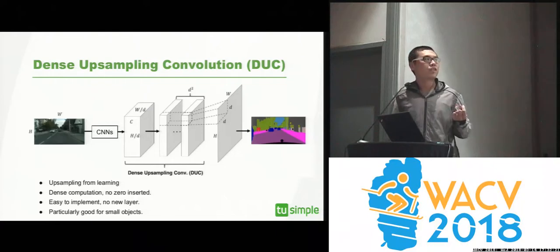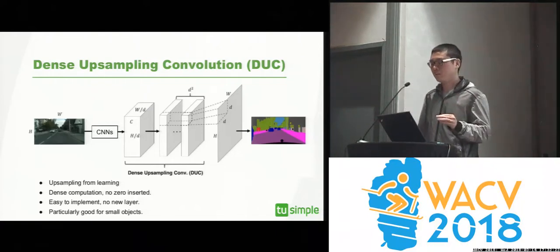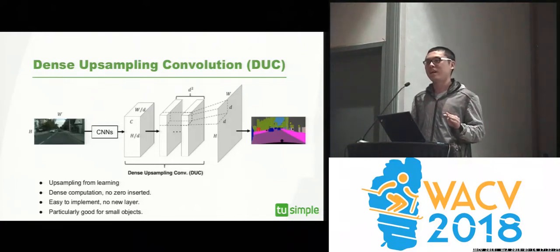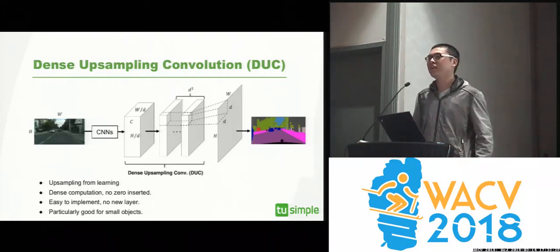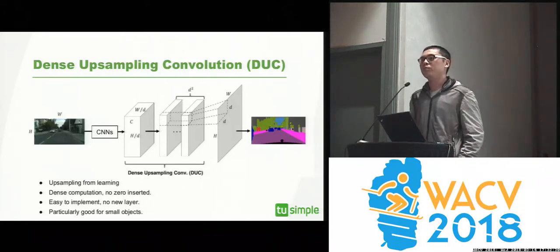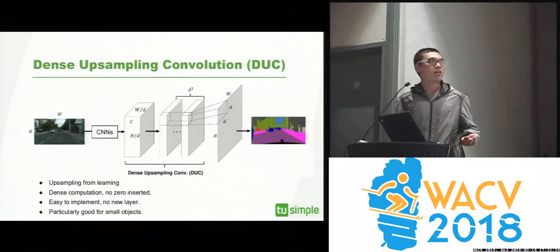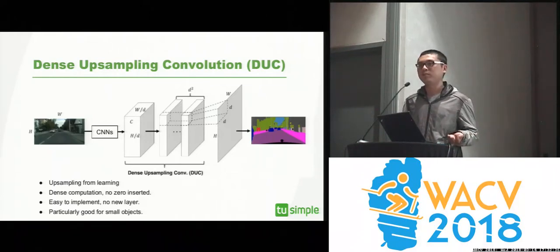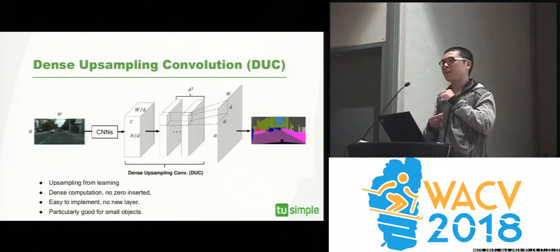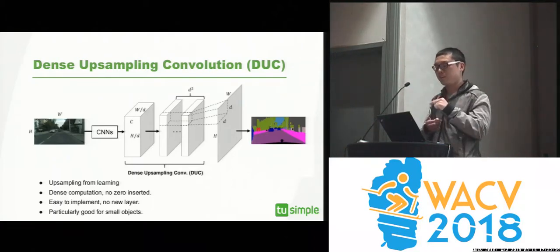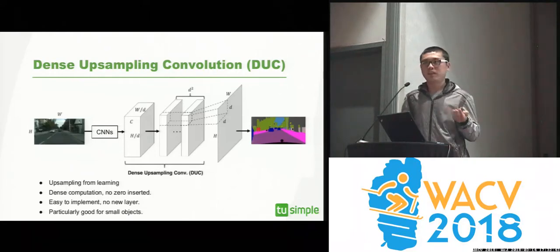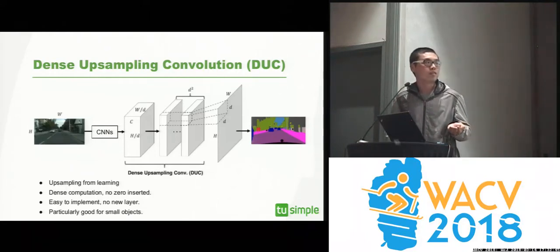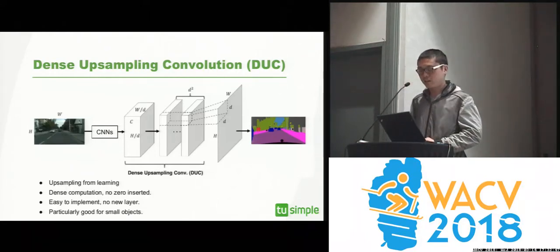Since all the convolutional operations are applied on every pixel, it's very dense — there are no extra zeros inserted or extra layers like in deconvolutional neural networks. Compared with bilinear upsampling, where there is some loss of information due to downsampling in spatial resolution, this technique will be particularly good for small objects or objects that are very far away.